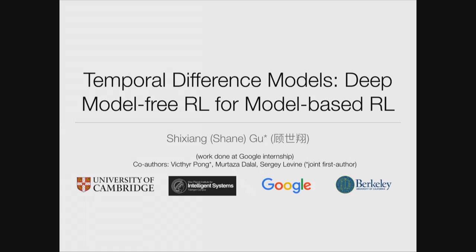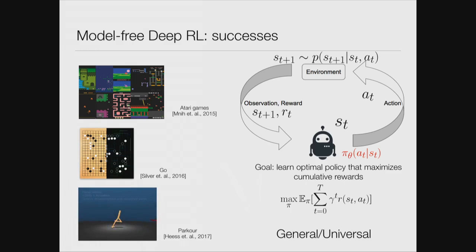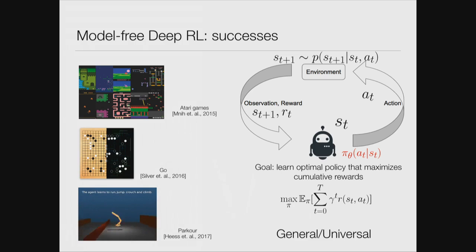Today I'll talk about model-free RL for model-based RL, and I can explain what that means. I think it's good to start by acknowledging the success of model-free deep reinforcement learning. Model-free reinforcement learning is a very general framework for solving sequential decision-making problems. It's shown to be very successful at solving very difficult tasks.